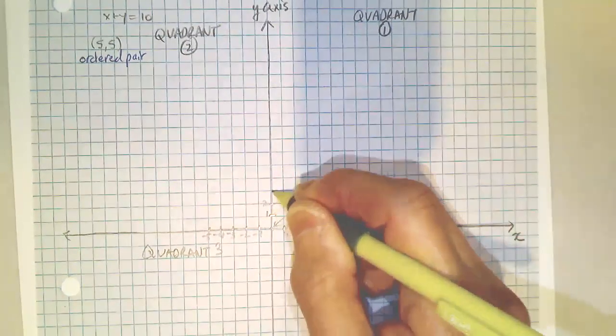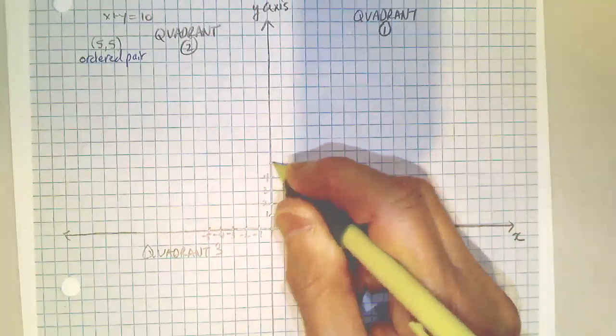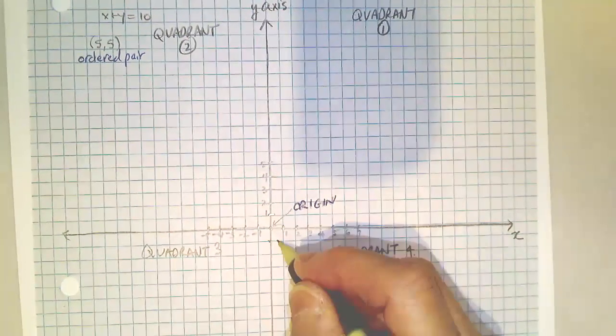If you go up, it's positive one, two, three, four, five. If you go down, it's negative.